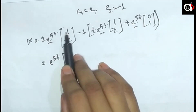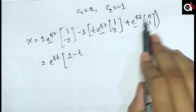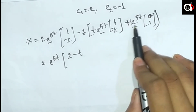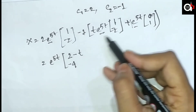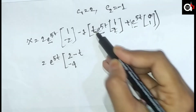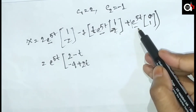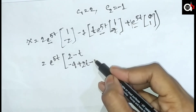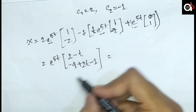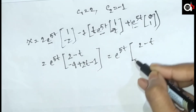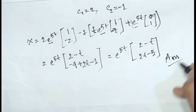Substituting c1 equals 2 and c2 equals minus 1 into the general solution and simplifying: x equals e to the power 5t times [2 minus t, minus 4 plus 2t] after combining components. Specifically the first component is 2 minus t and the second component is minus 5 plus 2t, all multiplied by e to the power 5t. This is our final answer.